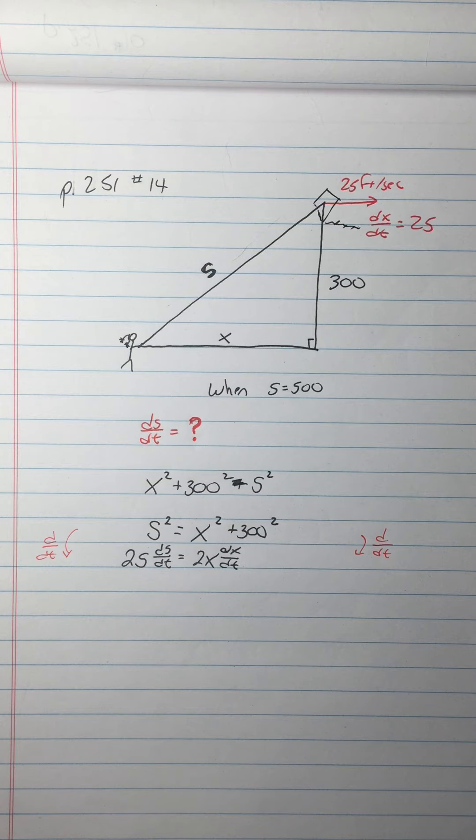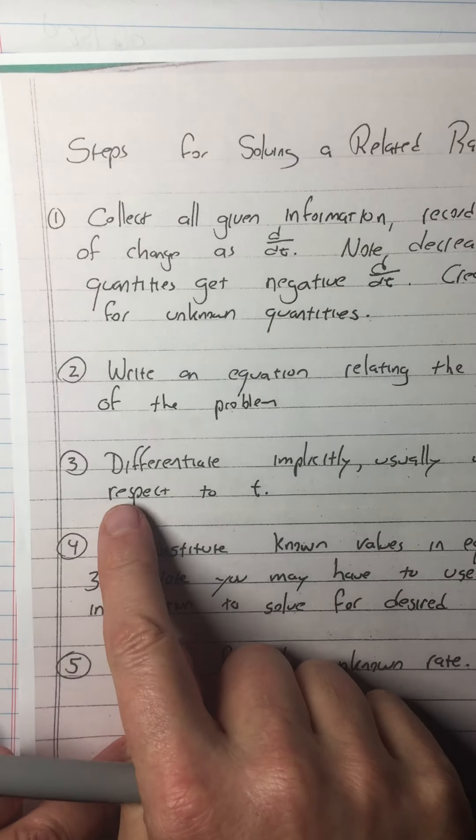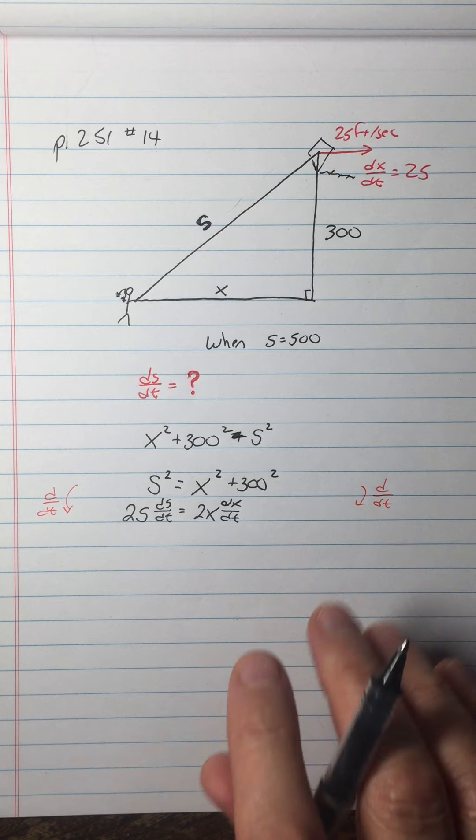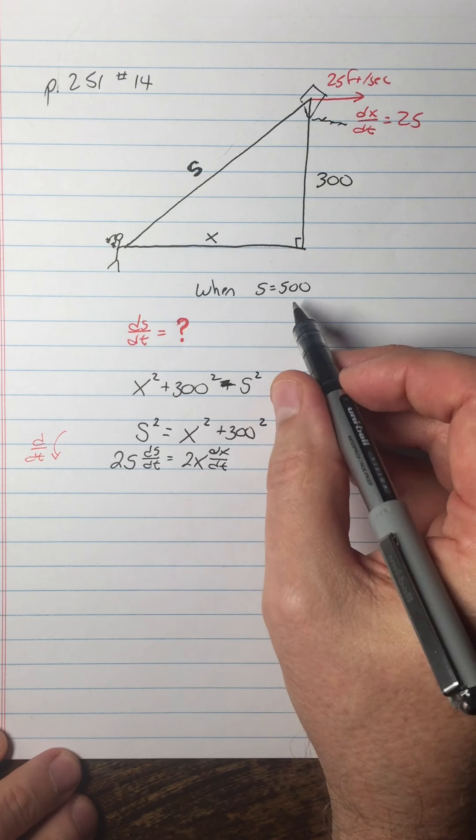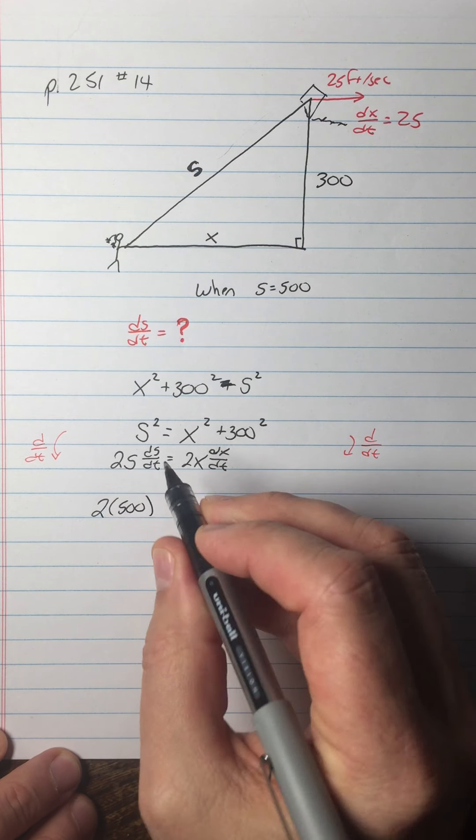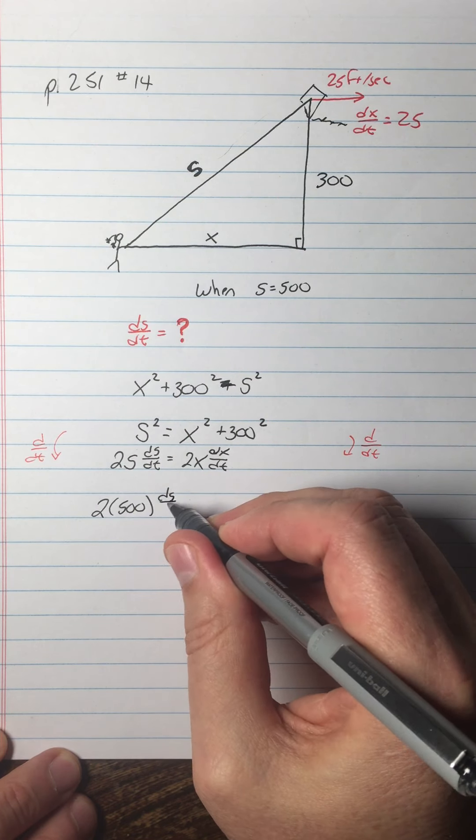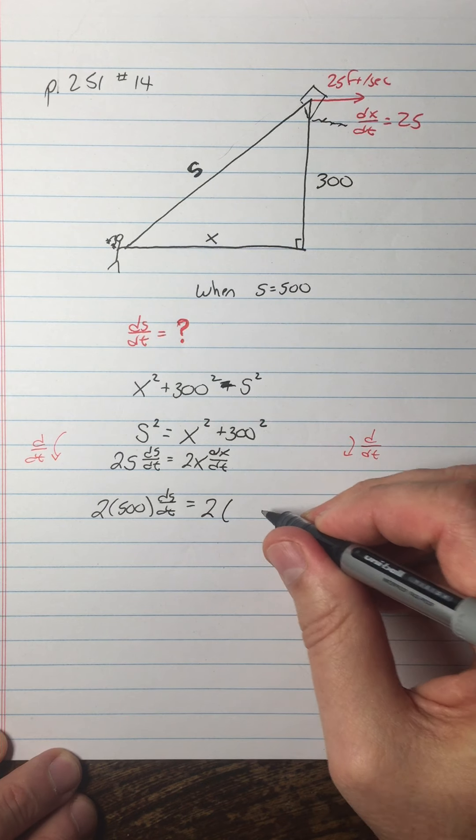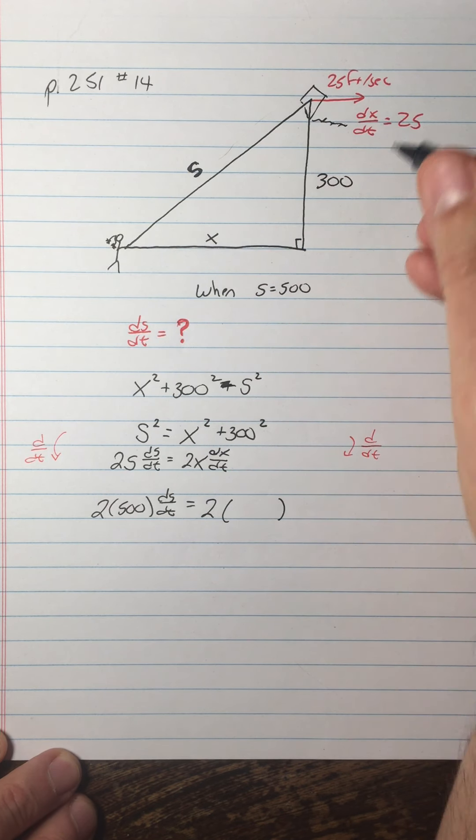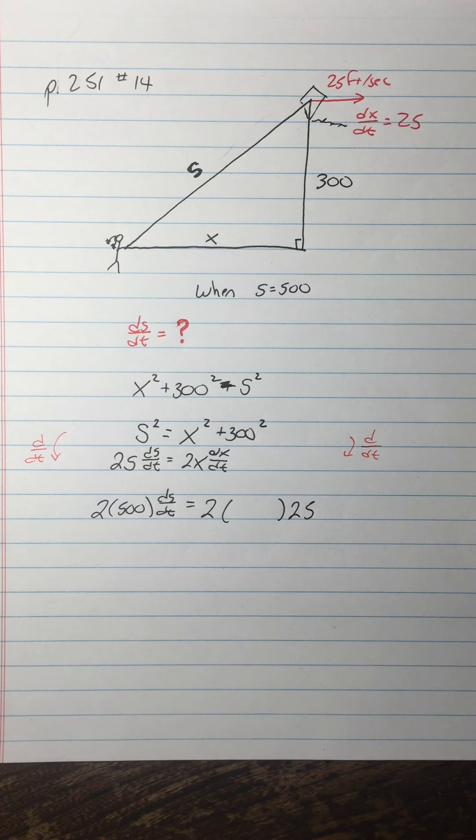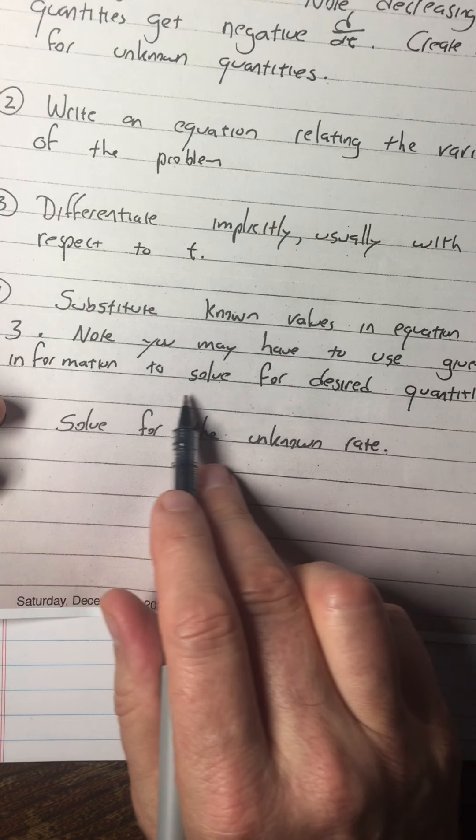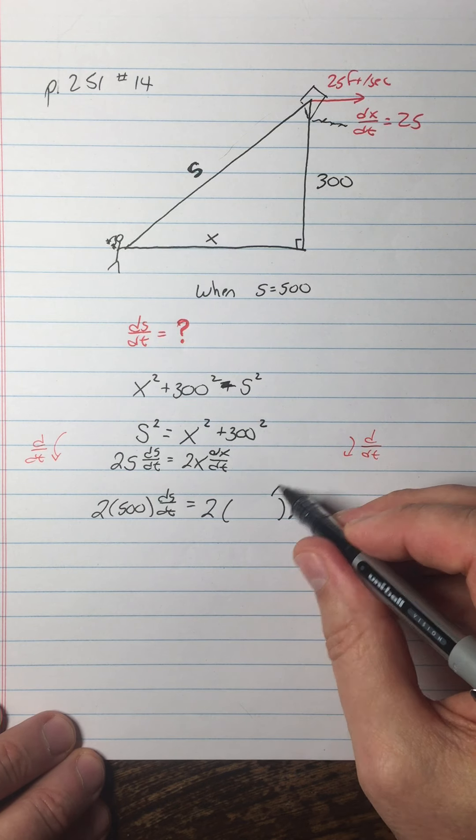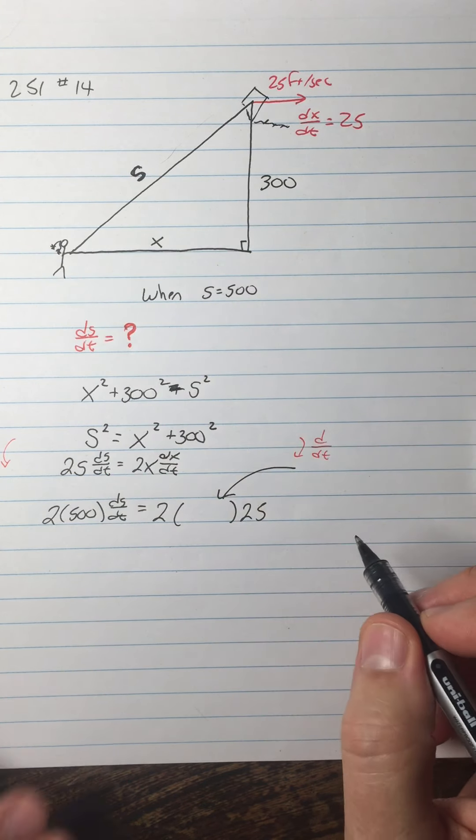All right, now what? So now I've differentiated implicitly. Now I'm ready to do step four, substitute known values. Okay, well, what do I know here? I know that at the particular instance that we're interested in, the s is equal to 500. So I can put two times 500. I know the ds/dt is what I'm looking for. I don't know what the x is when s equals 500. I'm going to just leave that blank for now and put in what I do know. dx/dt is 25. And this is a great example of you may have to use given information to solve for desired quantities. I need to know what that x is. So in order to find out what the x is, I'm going to have to solve for x at this particular moment when s equals 500.